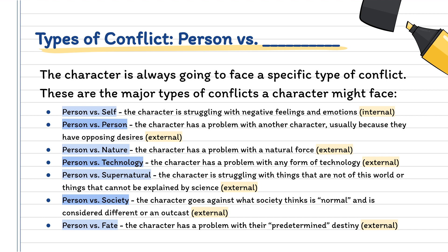Next, we have person versus technology. This is when your character is going to struggle with some form of technology — this can be new technology, futuristic technology, or even older technology. Maybe their windmill broke or their water wheel broke. Maybe it's set in the future and society is falling apart because the robots are taking over. Person versus technology is a problem that's starting to pop up more in stories, especially as we move forward with more technology.